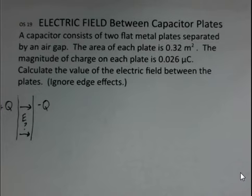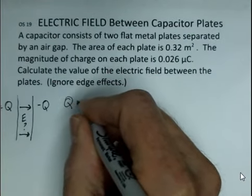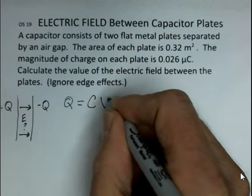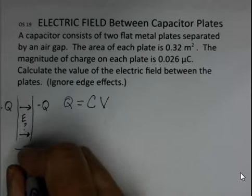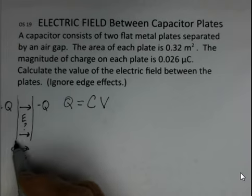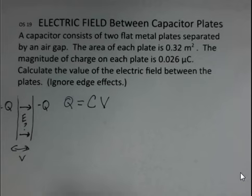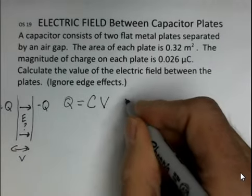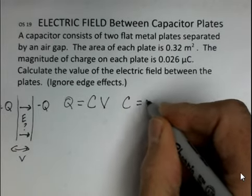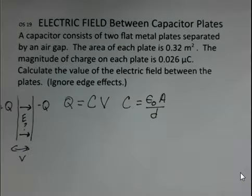There are some equations for capacitors that connect parameters. One of these is the charge on each plate, the magnitude, is equal to the capacitance value times the potential difference between the two plates. So there's some potential difference V. Another equation is the capacitance value is equal to a constant epsilon naught multiplied by area, divided by distance between the two plates.